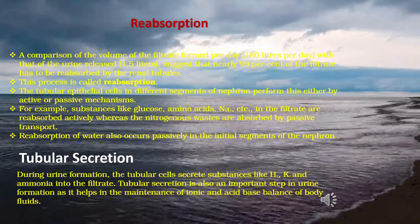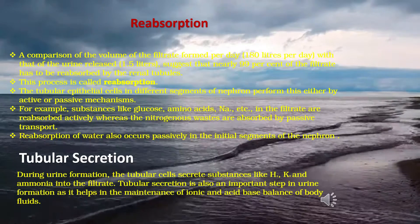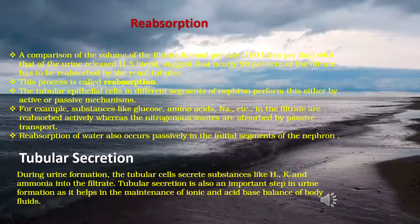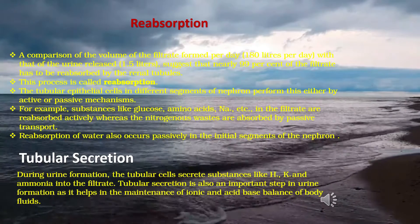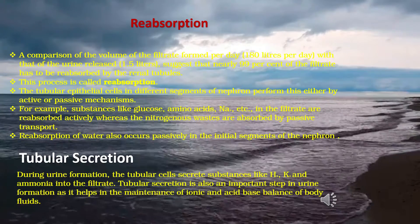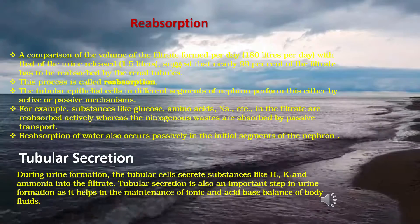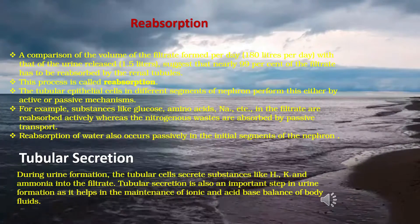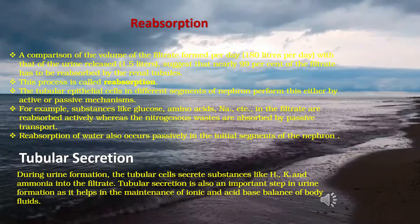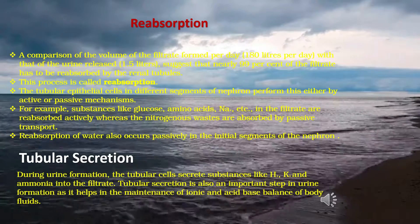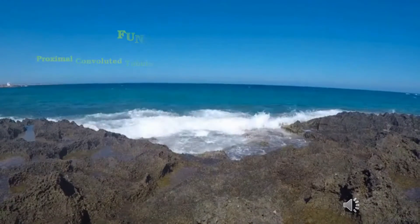During urine formation, tubular cells secrete substances like hydrogen ions, potassium ions, and ammonia into the filtrate. Tubular secretion is an important step in urine formation as it helps in the maintenance of the ionic and acid-base balance of body fluids.